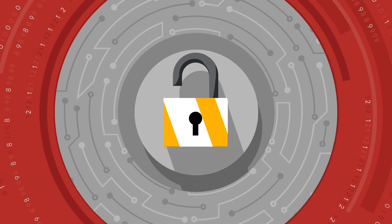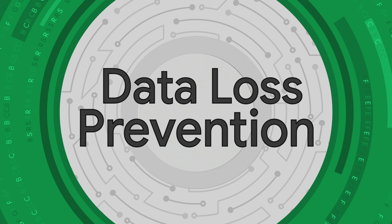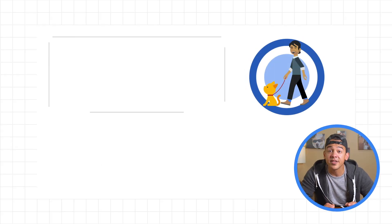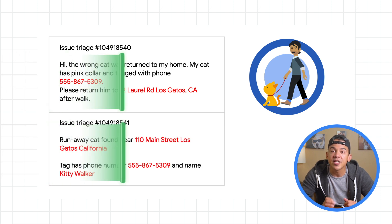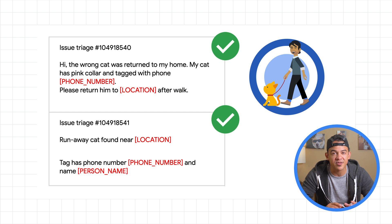Our favorite catwalking company has been using Cloud DLP to automatically redact and replace sensitive values from their data. But what about data that they need to protect but still use for things like billing? Kitty Catwalks has already implemented Cloud DLP to apply redaction and replacement in their issue ticketing system so they don't inadvertently log any sensitive information from their customers.